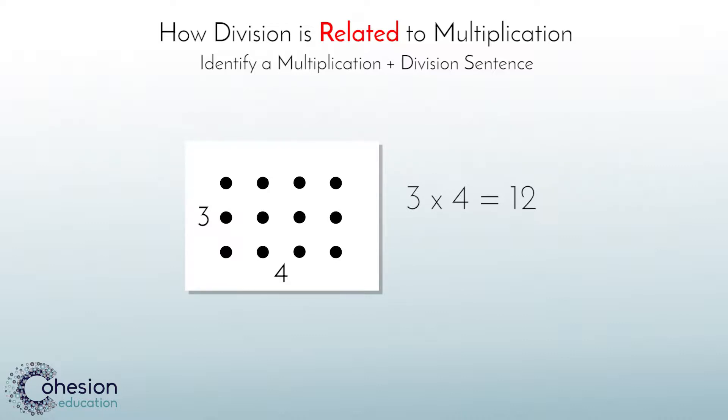The inverse or the division equation that would be represented by this array would start with the total amount of circles, 12 divided by the 3 rows, with 4 in each row, resulting in an equation that reads 12 divided by 3 equals 4. Students could also give the total of 12 divided by 4 columns equals 3 in each column, meaning 12 divided by 4 equals 3.